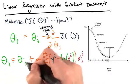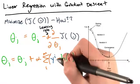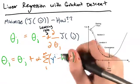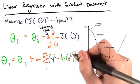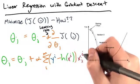Theta j is equal to theta j plus alpha, the sum from 1 to m of y superscript i minus h of x superscript i. In all of this, we're going to multiply by x sub j superscript i.